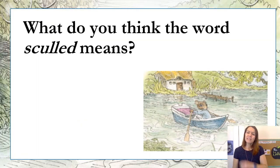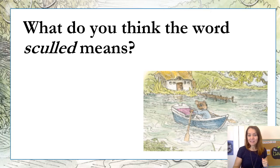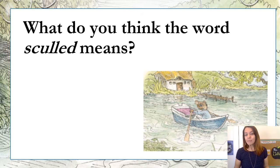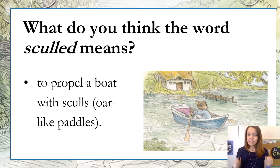What do you think the word 'sculled' means? In the text it said 'the Rat sculled across.' We see him in the picture holding something that looks like oars. This is another example of British English — sculled means to propel a boat with sculls, which are oar-like paddles.